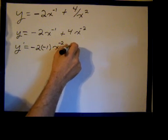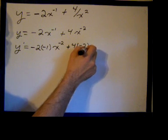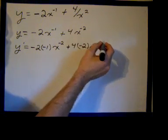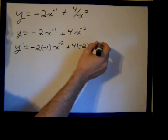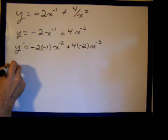And then plus 4, bringing the power of negative 2 down in front, and then knocking down negative 2 by negative 1, so negative 2 minus 1 is negative 3. Now we'll just clean it up a little bit.